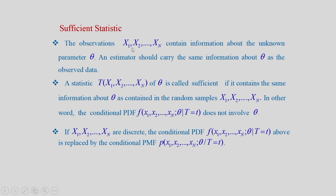The observations X1, X2, up to Xn contain information about the unknown parameter theta, and because of that we are able to estimate theta from the observations. An estimator should carry the same information about theta as the observations — whatever information is there for theta, the same should be carried by the estimator.